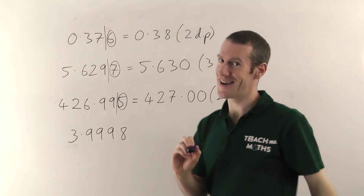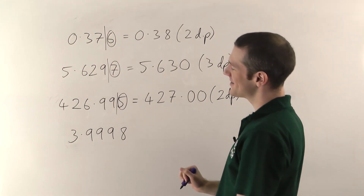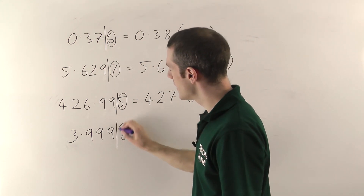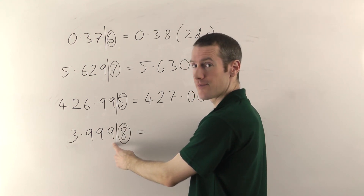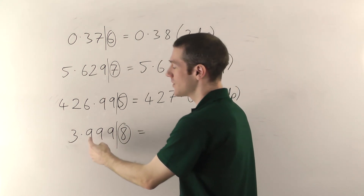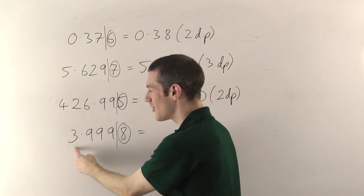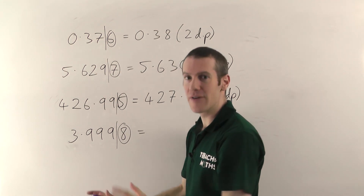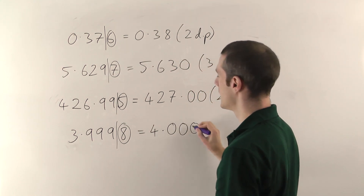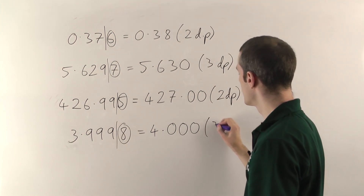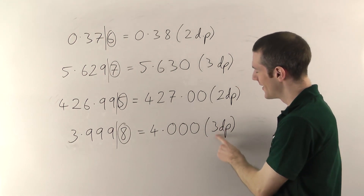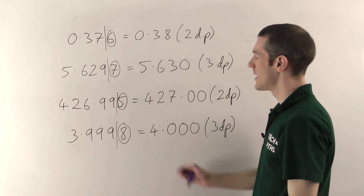Last example: 3.9998. You can probably see we're going to have a lot of rolling over. Let's round to three decimal places — one, two, three. Line goes there. Look at the next one: five or more, so this goes up. It's a 9, so it rolls over to 0, which adds one onto that column — that 9 rolls over, adds one onto the next — that 9 rolls over, adds one onto the 3, which becomes a 4. The answer is 4.000. Check that you do have three decimal places, even if they're zeros. That's your final answer.